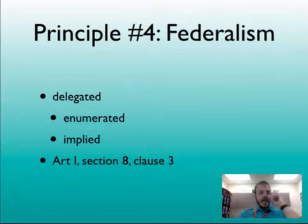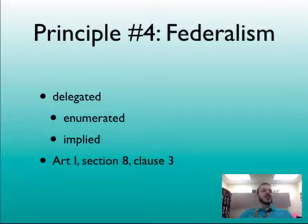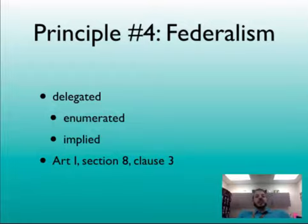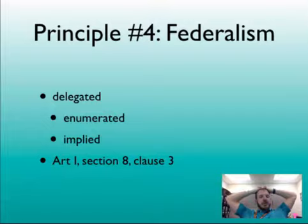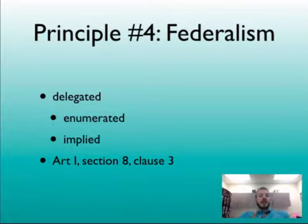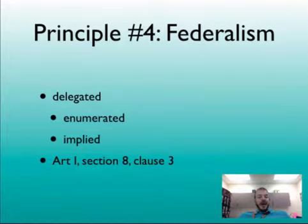Those enumerated powers are specifically listed as powers the federal government has. But Article 1, Section 8, Clause 3 says the federal government also has the power to do all things that are necessary and proper to carry out those specific listed powers. This is called the elastic clause because it stretches the power of the federal government. The first example we have of this is the Federal Bank of the United States, created not because the Constitution says Congress can make a bank, but because Congress has the power to regulate commerce. When you combine the power to regulate commerce with the elastic clause, you can justify Congress having the power to create a bank.